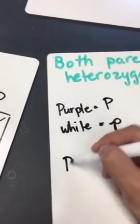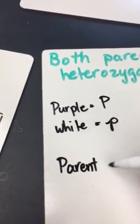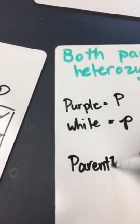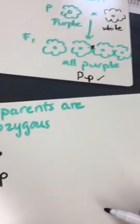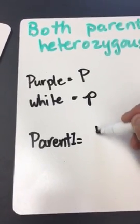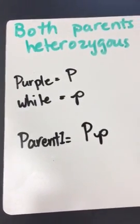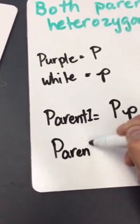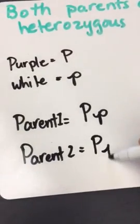Parent one. Step two is determine each parent's genotype. So parent one, both parents are heterozygous. So heterozygous means different. They're going to be capital and lowercase. Since both parents are heterozygous, parent two is going to be the same. Heterozygous.